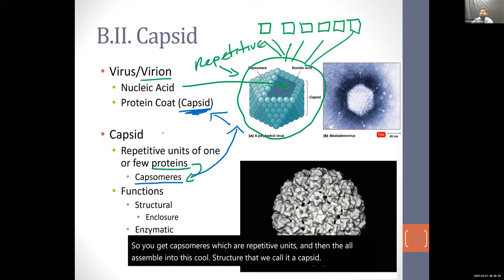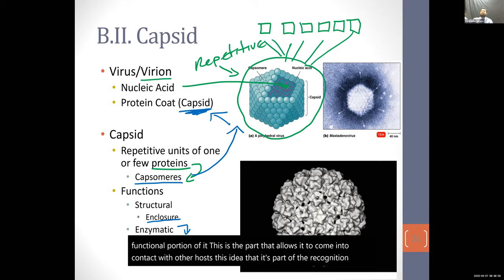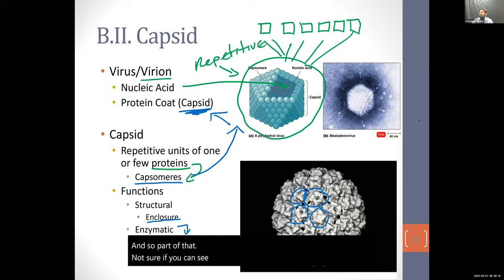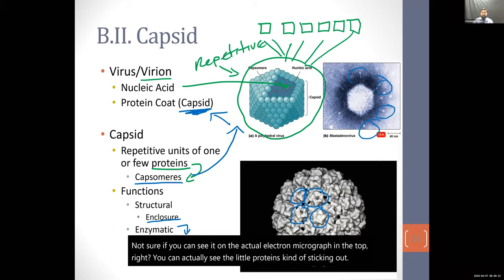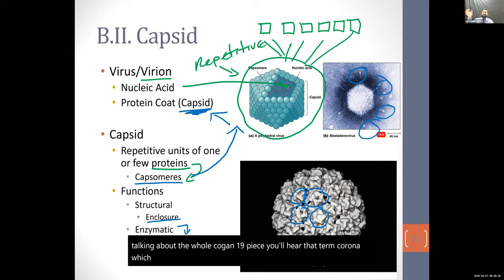The capsid functions primarily as an enclosure, like a barrier, but also has a functional portion — it's part of the recognition process, part of that handshake. You can see the repetitive unit on the computer model going over and over, and on the electron micrograph you can actually see the little proteins sticking out. For those following COVID-19 news, the term 'corona' means crown — the virus has little spikes on the outside as part of its recognition process.